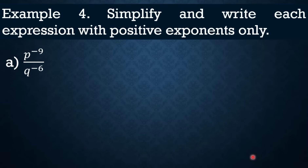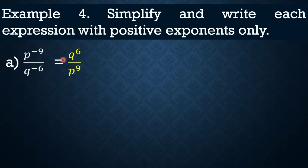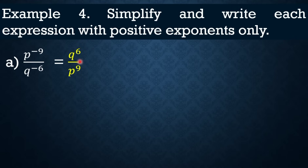Another example: P raised to negative 9 over Q raised to negative 6. Since they have different bases, we cannot directly apply the quotient rule. Shortcut: when both numerator and denominator have negative exponents, just swap their positions. So P raised to negative 9 over Q raised to negative 6 becomes Q raised to 6 over P raised to 9. That is the answer.